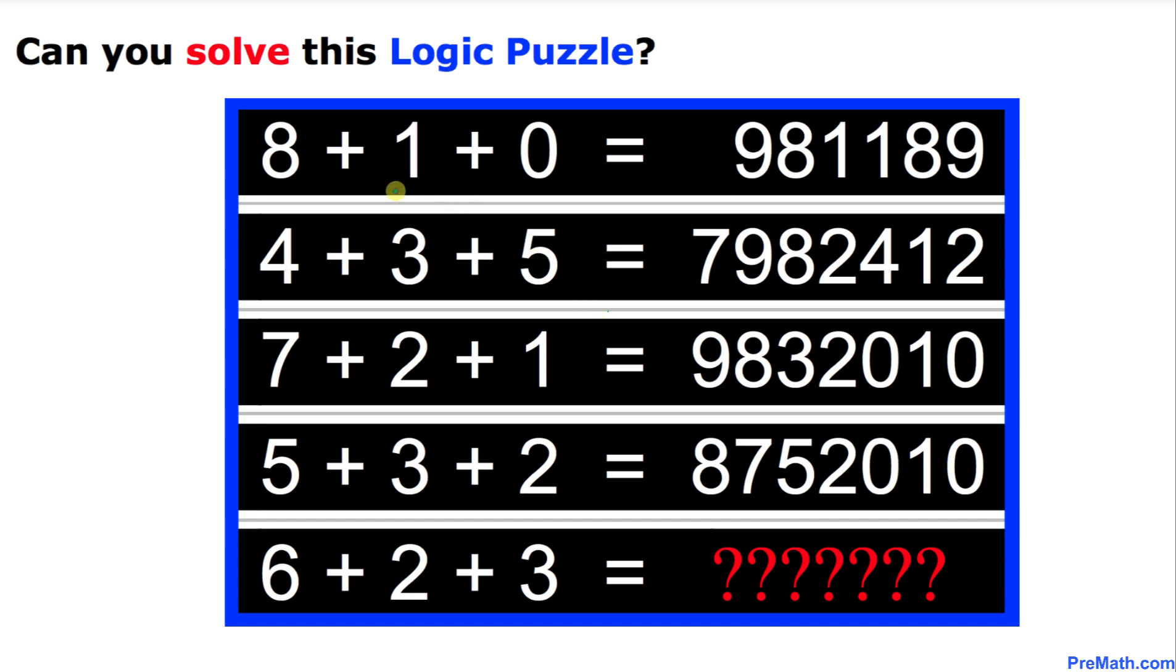Now as you can see, we are adding three single-digit numbers on the left-hand side and we get a huge number on the right-hand side. The question is, what is going to be the answer if we add six plus two plus three?